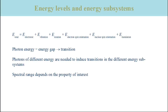When we need photons of different energies to induce transitions in different energy subsystems, this implies that we need photons from different spectral regions. For example, for electronic transitions we need photons from the ultraviolet and visible range. To induce vibrational transitions we need photons from the infrared spectral range. For electron spin orientation changes we need microwave photons, and for transitions between different nuclear spin orientations we need photons from the radio frequency spectral range.